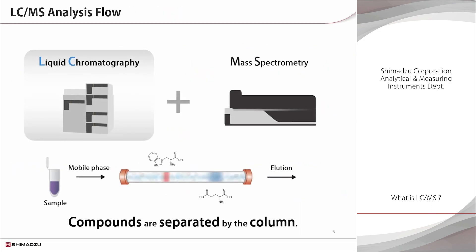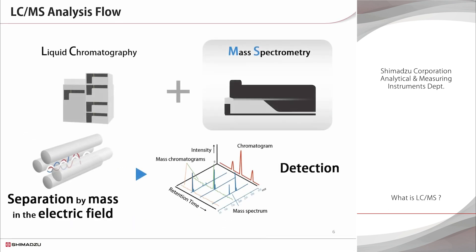On the other hand, LC-MS uses volatile solvents such as formic acid and acetic acid, rather than phosphoric acid buffers and other non-volatile solvents often used as mobile phases in LC. The following is a simple overview of the LC-MS analysis flow. First, the sample is injected into the LC unit. The compounds in the sample are separated by differences in their affinity for the fixed and mobile phases in the column attached to the LC unit. The compounds separated by the column are then ionized in the mass spectrometer. The compounds are separated by the difference in their masses and then reach the detector. As a result, with LC-MS, compounds are separated in two stages by LC and MS, so separation selectivity is dramatically higher than with LC, making LC-MS suitable for the analysis of complex samples.